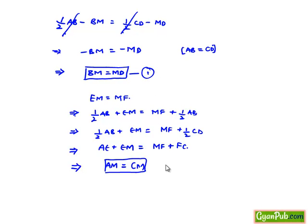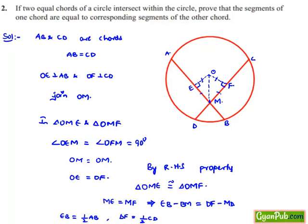Now, by result 1 and 2, we can say that if two equal chords of a circle intersect within the circle, the segments of one chord will be equal to corresponding segments of other chord.